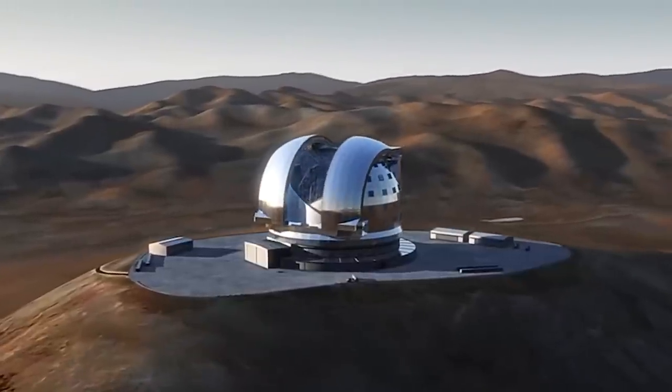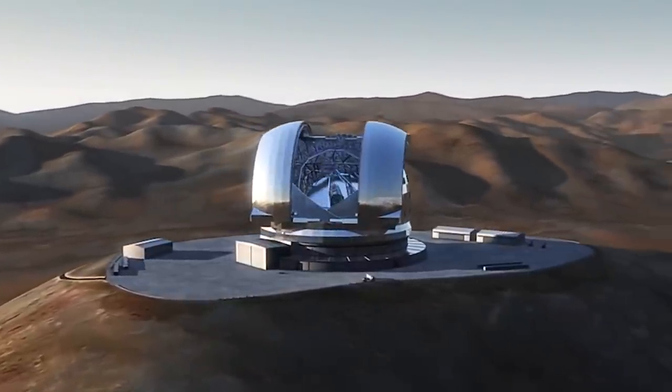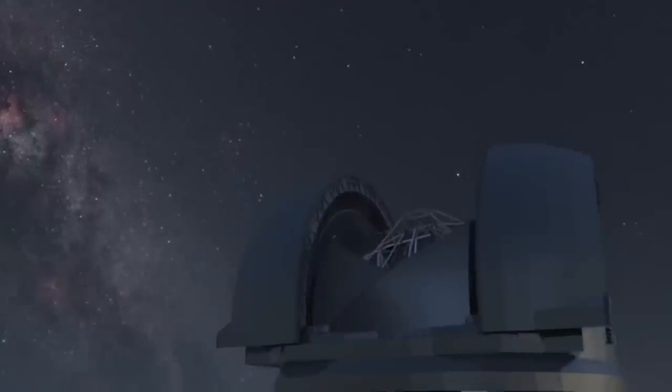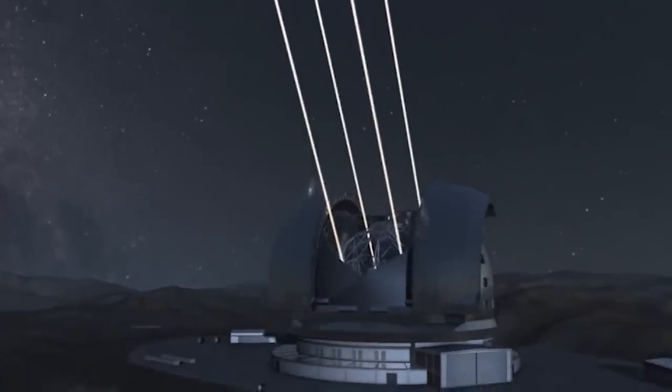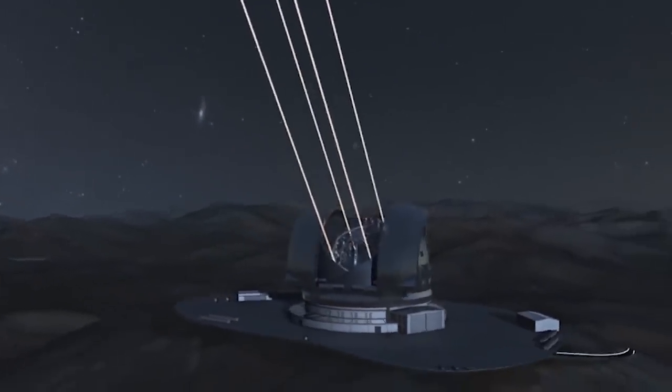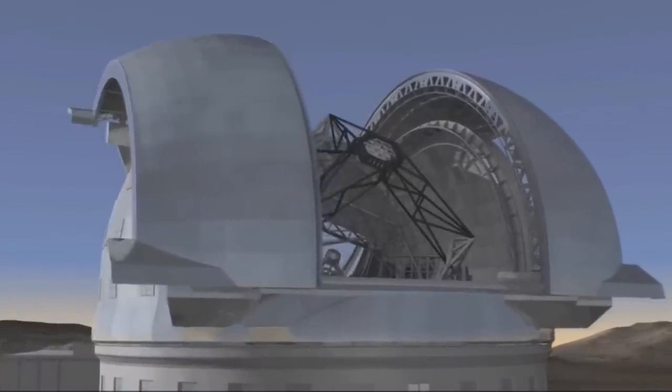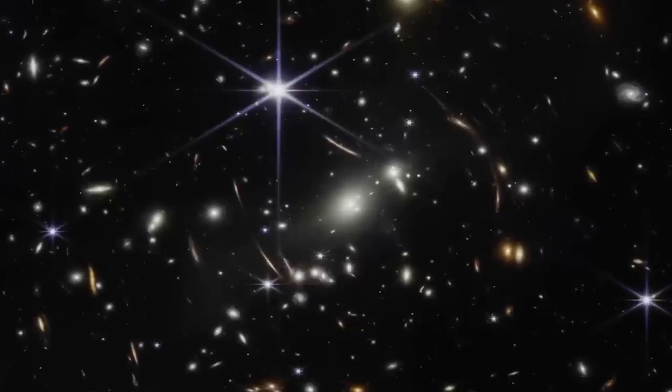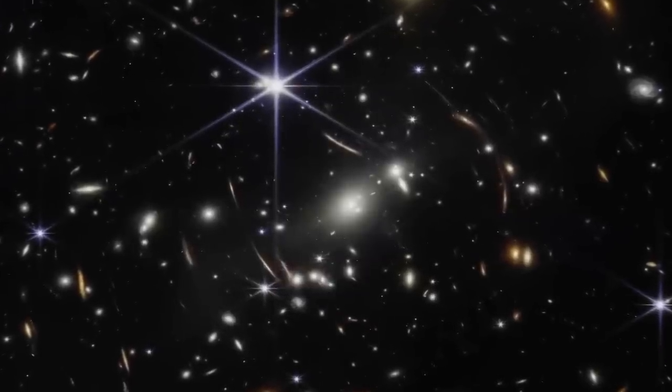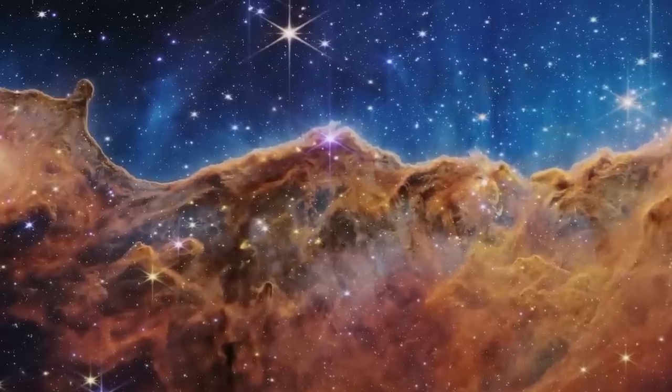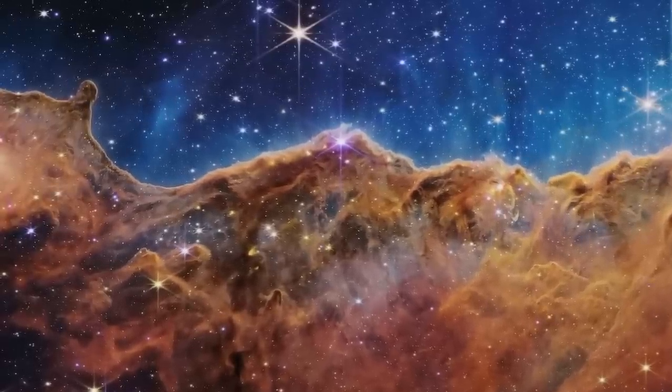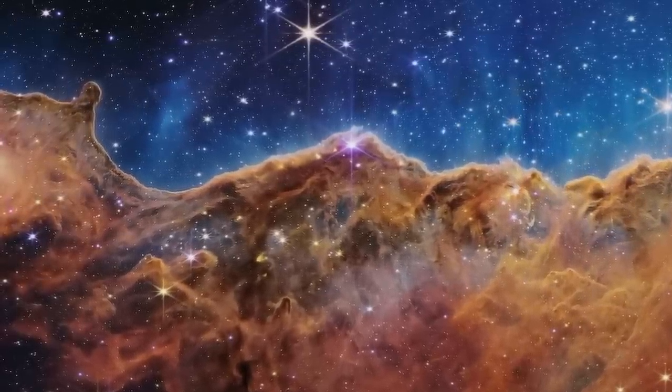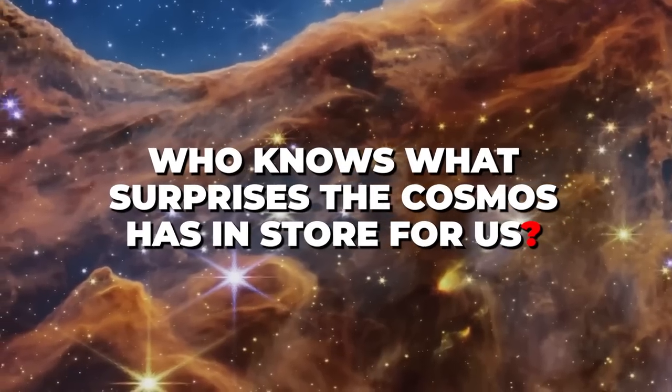These aren't your typical backyard telescopes. They're enormous structures, housing mirrors the size of swimming pools and packed with advanced technologies like adaptive optics, which corrects for the blurring effect of the Earth's atmosphere, providing images as clear as if the telescope were in space. These new telescopes won't just give us better views of the stars and galaxies we already know about, they'll allow us to see things we can't even imagine yet. Who knows what surprises the cosmos has in store for us?